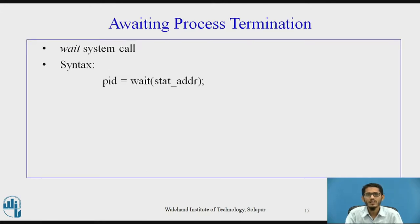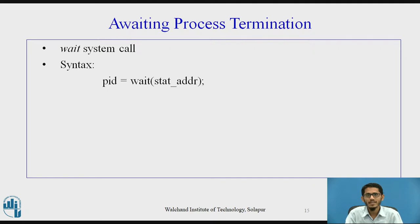Next we will see awaiting process termination. A process can synchronize its execution with the termination of a child process by executing the wait system call. The syntax is: pid = wait(stat_address), where pid is the process ID of the zombie child and stat_address is the address in user space of an integer that will contain the exit status code of the child.